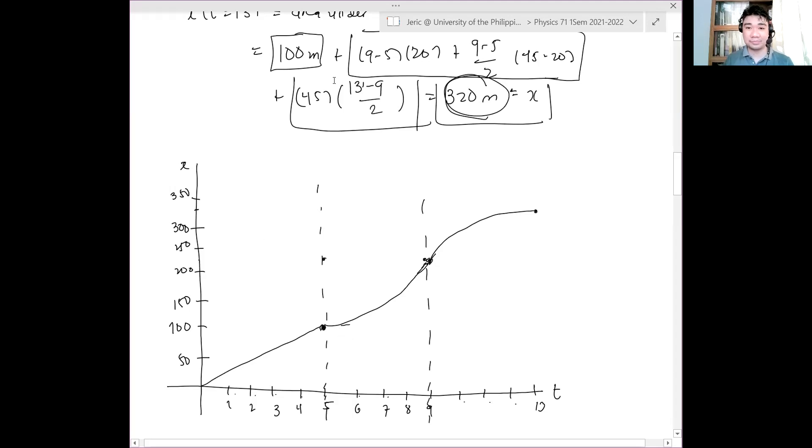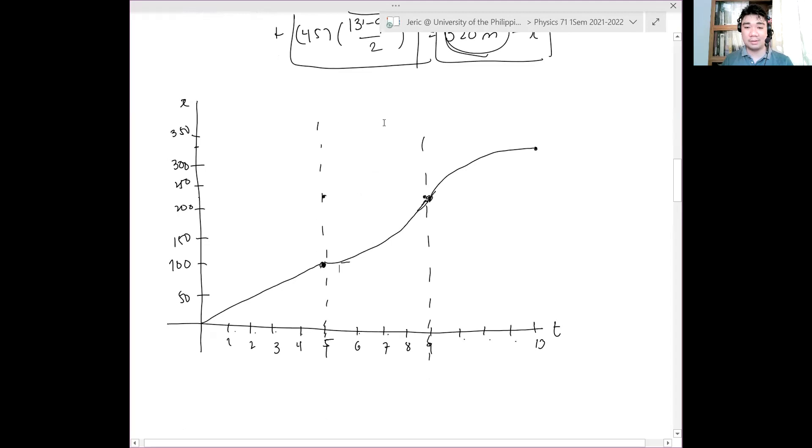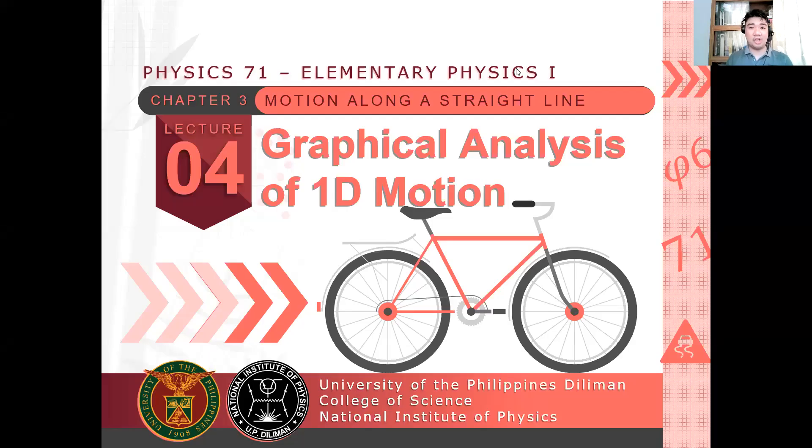Other questions? If there are no more questions, thank you very much for attending this session. Tomorrow we will have our discussion for uniform accelerated kinematics. What if the acceleration is constant? What equations can we obtain from that? We can solve a lot of problems with the assumption that the acceleration is uniform for a particle moving in one dimension. Thank you very much, and I'll see you all tomorrow.